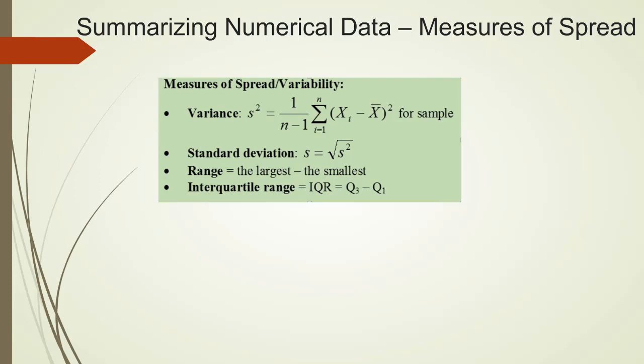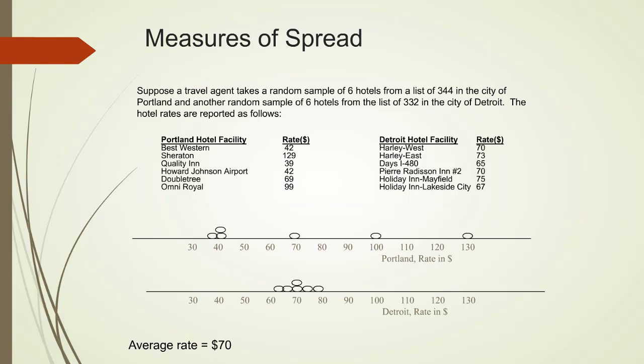I'm going to use the following example to explain variance and standard deviation. A travel agent sampled six hotels from Portland and six hotels from Detroit. The hotel rates are given here. I also plotted them on two number lines. The sample means for both cities are $70.